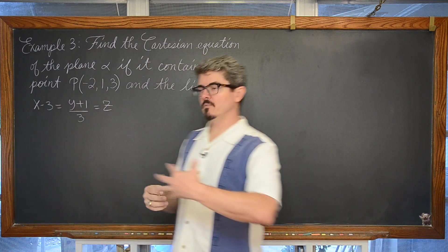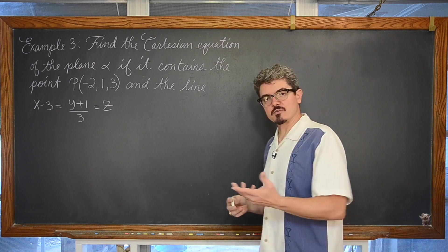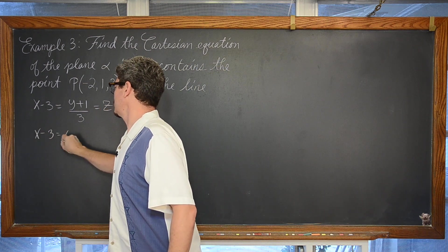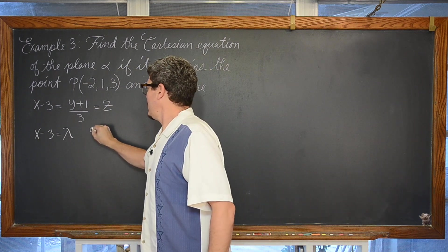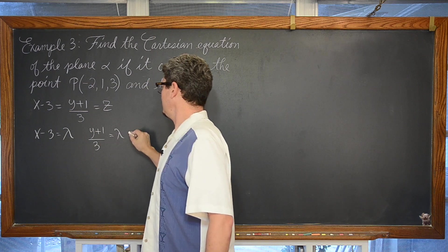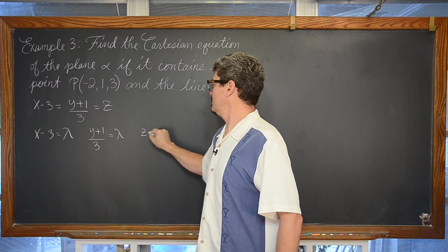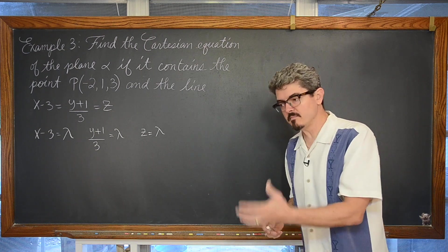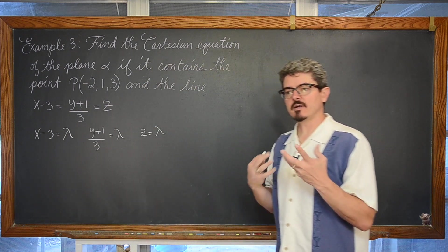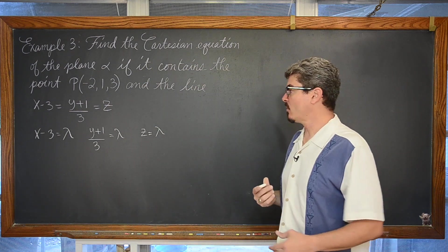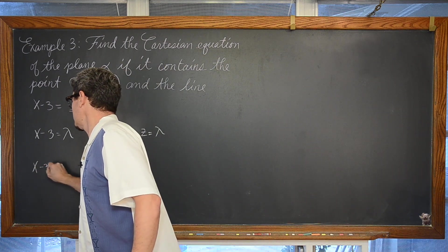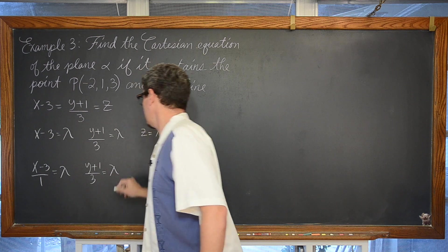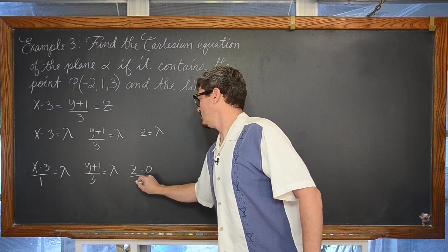So we are going to break this apart from Cartesian into the three parametric forms describing this line. So we have x-3 is equal to lambda. We have y plus 1 over 3 is equal to lambda and z is equal to lambda. Just to make this really clear we are going to make each one of these look identical so we can clearly see at least one point and find a direction vector for that line. So we write this as x-3 over 1, y plus 1 over 3 equals lambda, and z minus 0 over 1 is equal to lambda.